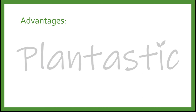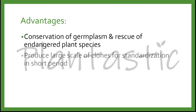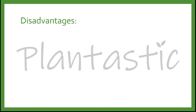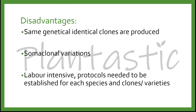What are the advantages of micropropagation? It can be used to conserve germplasm and rescue endangered plant species from extinction. It can produce large-scale genetically identical clones for standardization in a short period. It can be applied in plant breeding to improve genetic content through somaclonal variations. On the other hand, disadvantages include that all clones share the same genetic content, meaning all batches have the same rate of tolerance and resistance to the environment as well as to pests and diseases. Somaclonal variations can occur through the subculture period, which may lead to epigenetic changes. Furthermore, micropropagation is a labor-intensive process in which protocols for each species and clone need to be optimized and established.